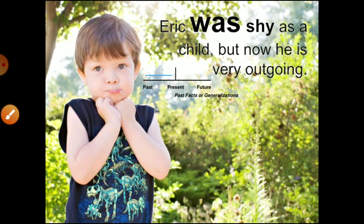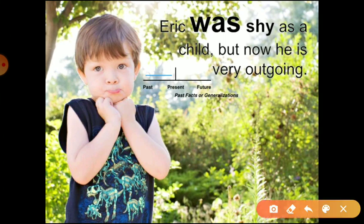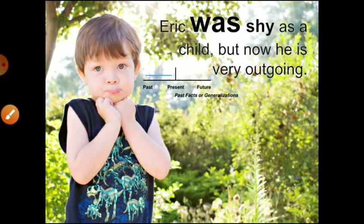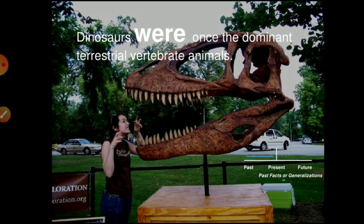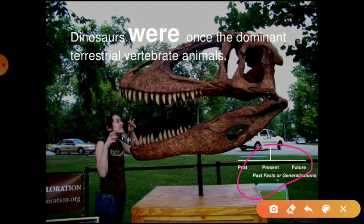Past facts, past habits, or generalizations are also expressed with simple past. For example: 'Eric was shy as a child, but now he is very outgoing.' Another example: 'Dinosaurs were once dominant terrestrial vertebrate animals, but they do not exist today.' This is past fact or generalization — we express such ideas using 'was' or 'were'.